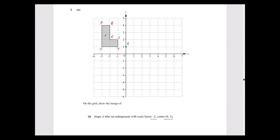We enlarge one point at a time — we change the length and its direction. I will start with T. From the center, T is one unit to the left. When I multiply by scale factor minus 2, this distance becomes 2 and the direction reverses — leftwards becomes rightwards. That gives us T'.